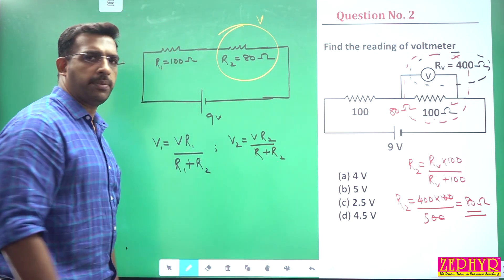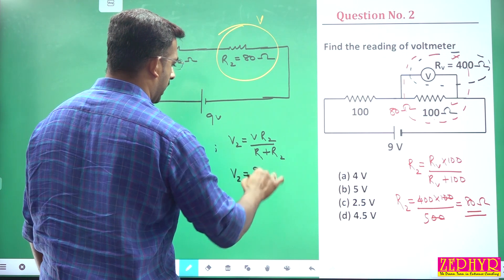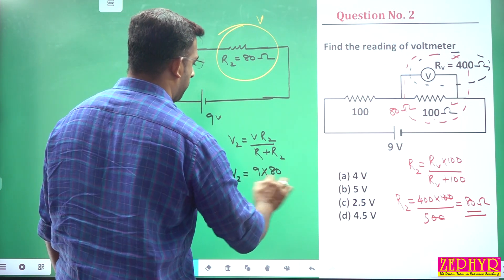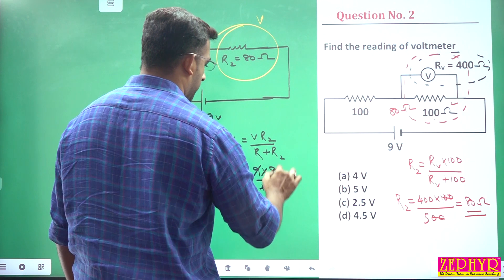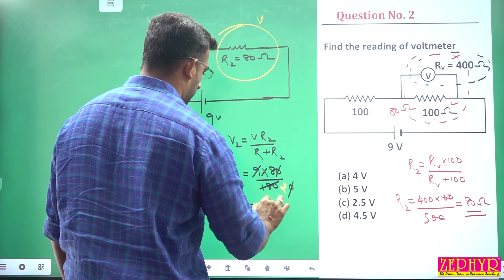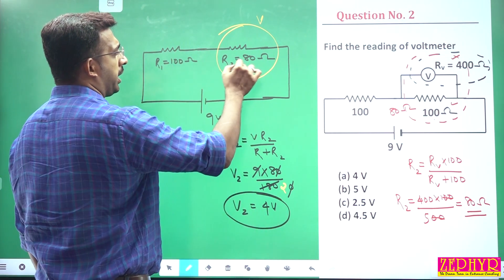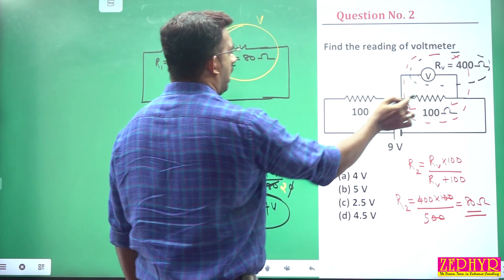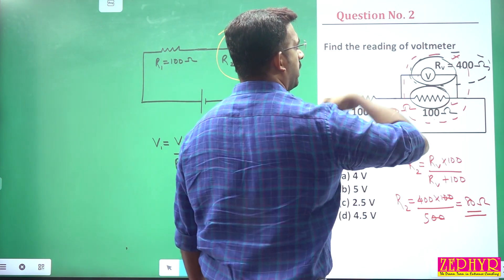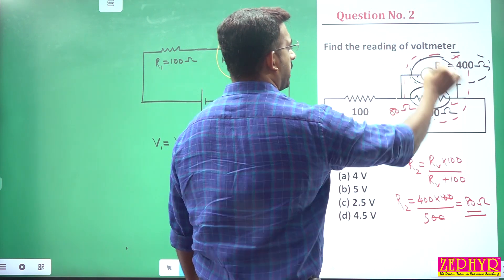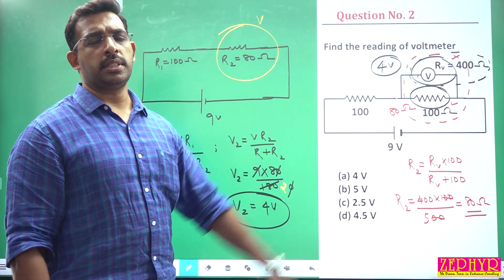Applying the voltage divider equation: V2 = 9 × R2/(R1 + R2) = 9 × 80/180. That gives 9 × 20/... so V2 = 4V. R2 is 80 ohm, R1 is 100 ohm, and the voltmeter reads 4V.